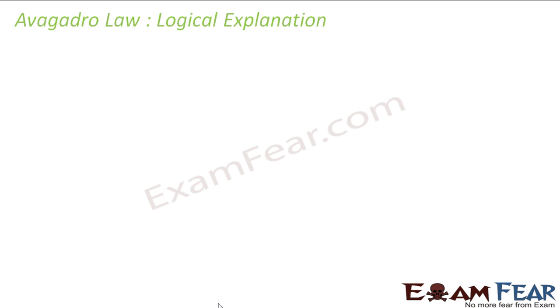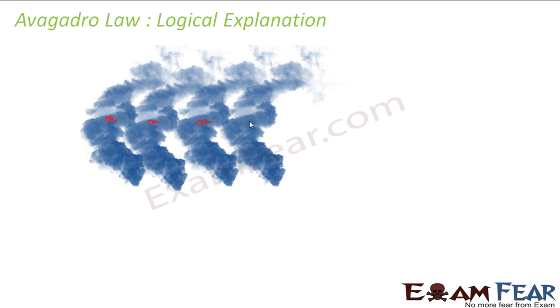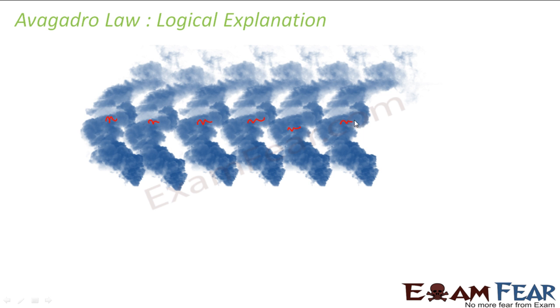Let us have a logical explanation of the Avogadro Law. So if my n molecules of a gas, let's suppose gas A, occupies this volume, another n molecules will occupy this volume. So two n will occupy double of the volume. Take another n of some other gas, it will occupy the same volume. Take another n, it will occupy the same volume. Take another n, it will occupy the same volume. So if n occupies this much, 2n occupies double of this, 3n triple of this, 4n four times of this, and it goes on.